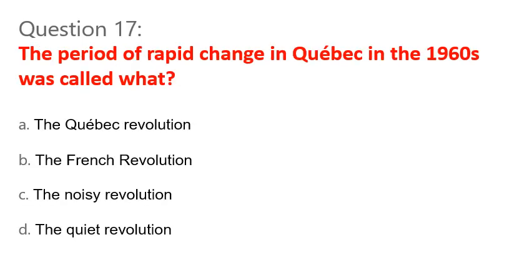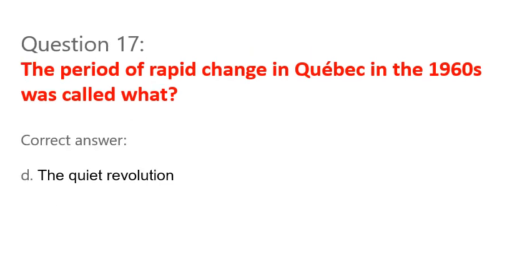Question 17. The period of rapid change in Quebec in the 1960s was called what? A. The Quebec Revolution. B. The French Revolution. C. The Noisy Revolution. D. The Quiet Revolution. Correct answer: D. The Quiet Revolution.